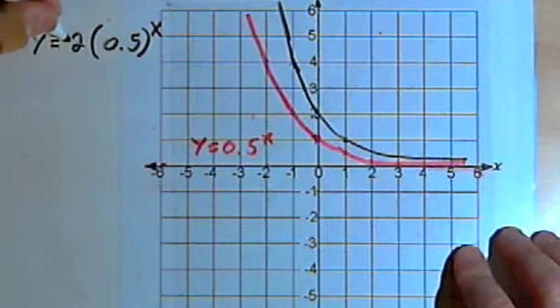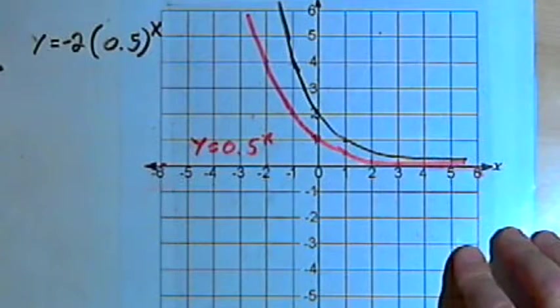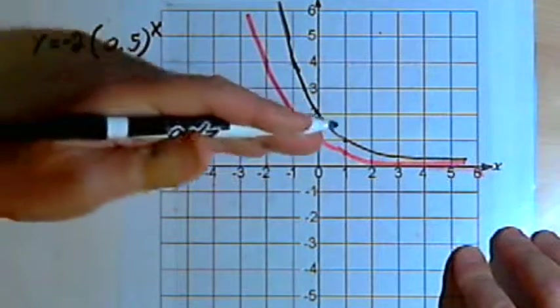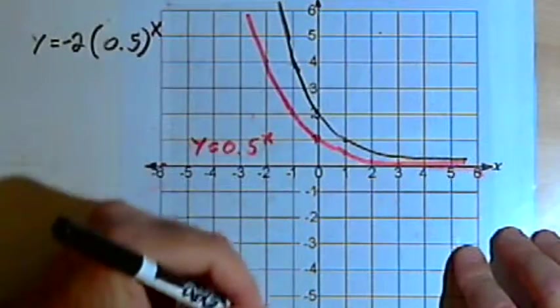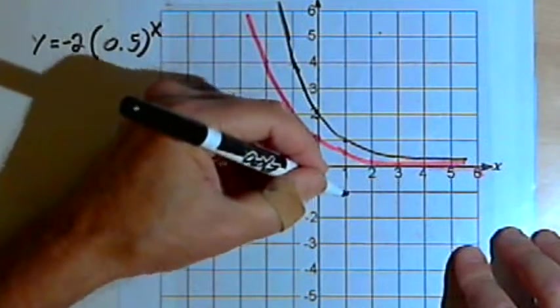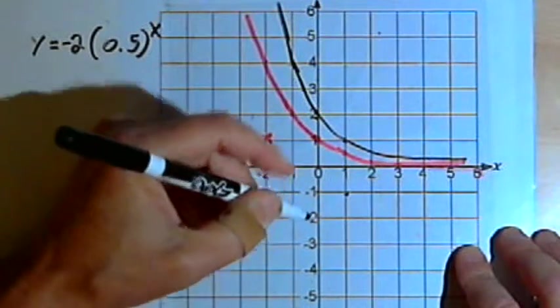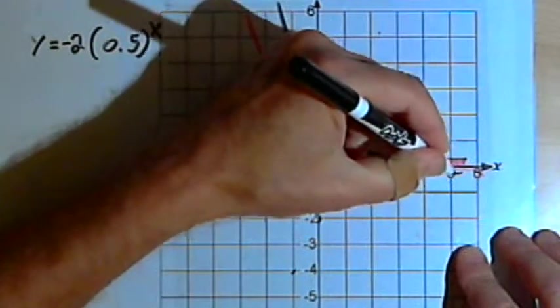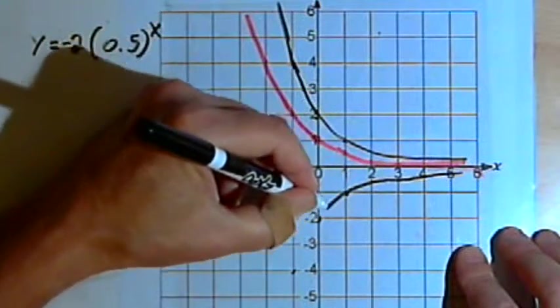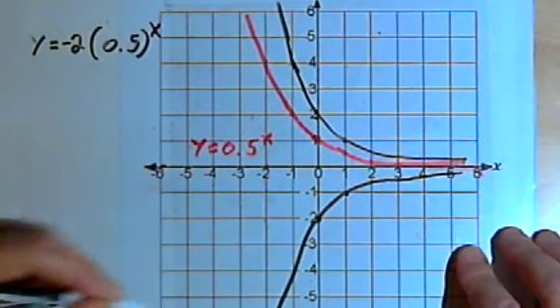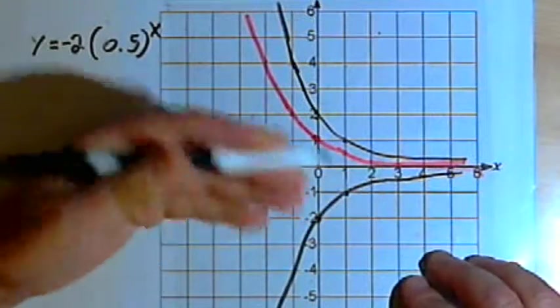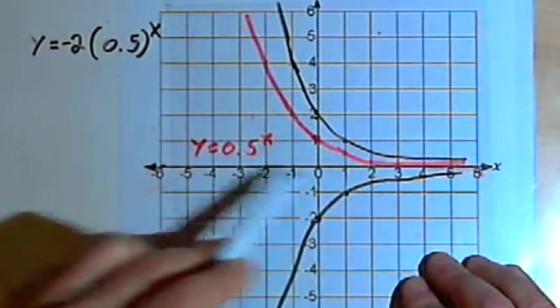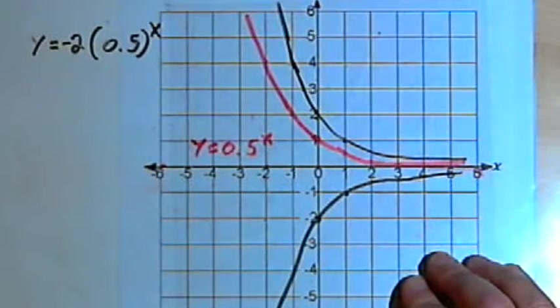If I had a negative sign in front of it, I made that negative 2, what that would do is not only stretch it, but it would also flip it over. So I'd have a graph that went down like this. It's stretched it and it's flipped it. It's reflected it across the x-axis.